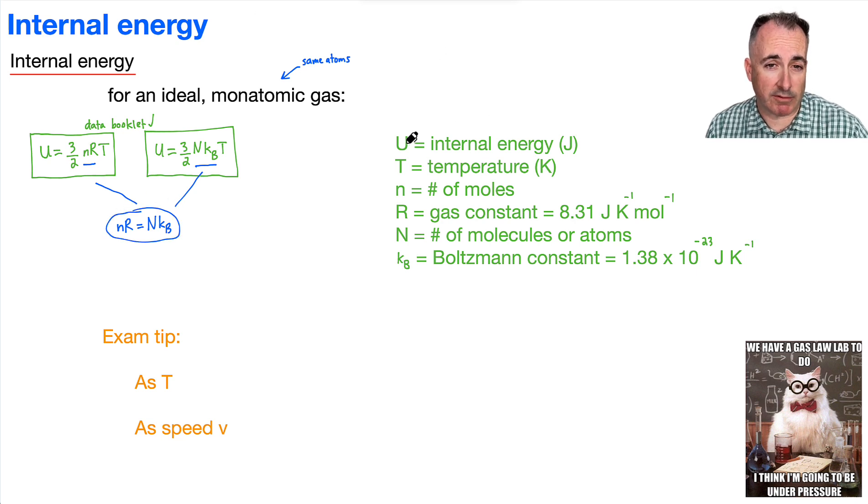Okay, so we know about our variables. We have U as the internal energy in joules. We have T as the temperature in Kelvin. Remember, lowercase n is the number of moles. R is this gas constant, capital N is the number of molecules or atoms, and this KB is Boltzmann's constant.